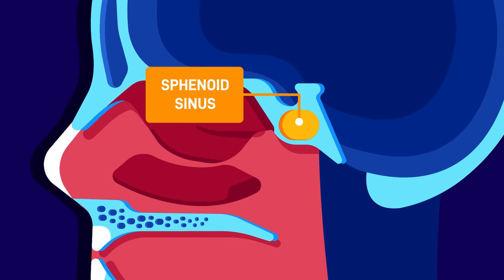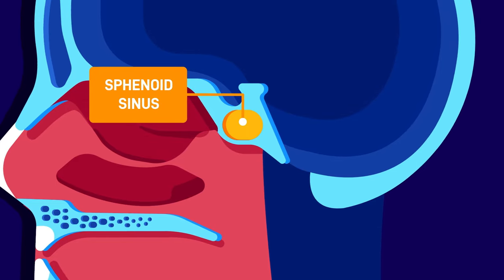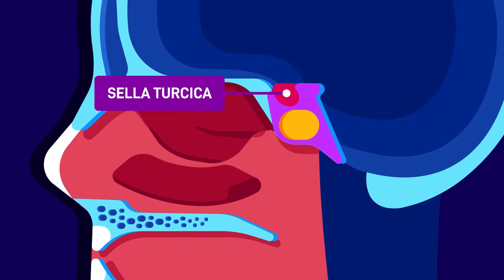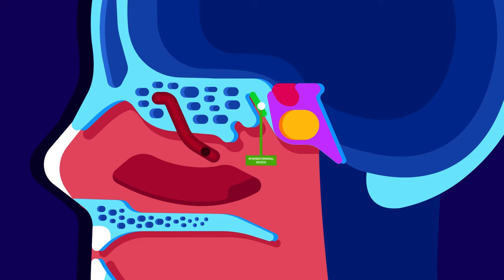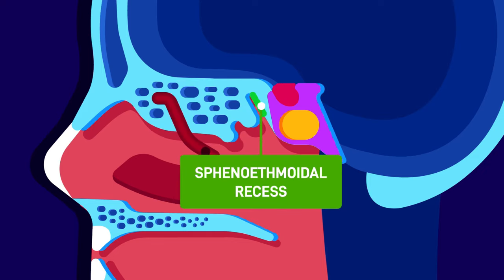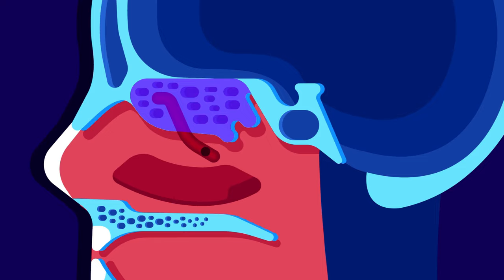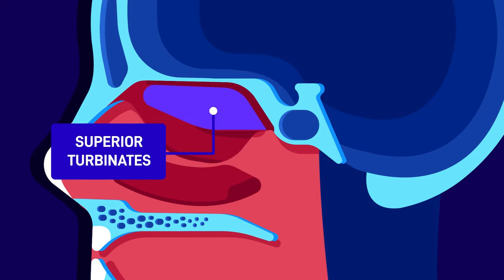Sphenoid sinuses. The sphenoid sinuses are situated posteriorly and in the centre, within the body of the sphenoid bone, below the sella turcica. They drain into the nasal cavity through the sphenoethmoidal recess, which leads to the superior meatus, behind the superior turbinate.